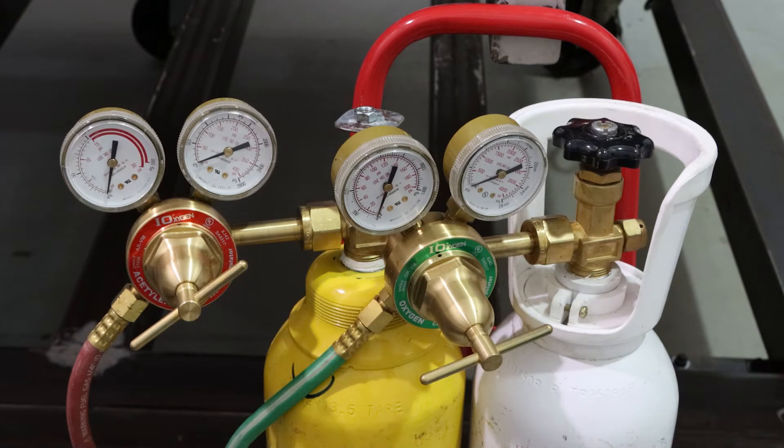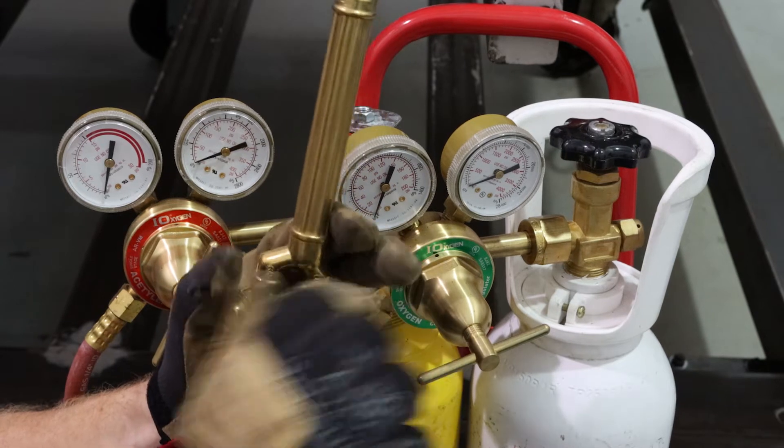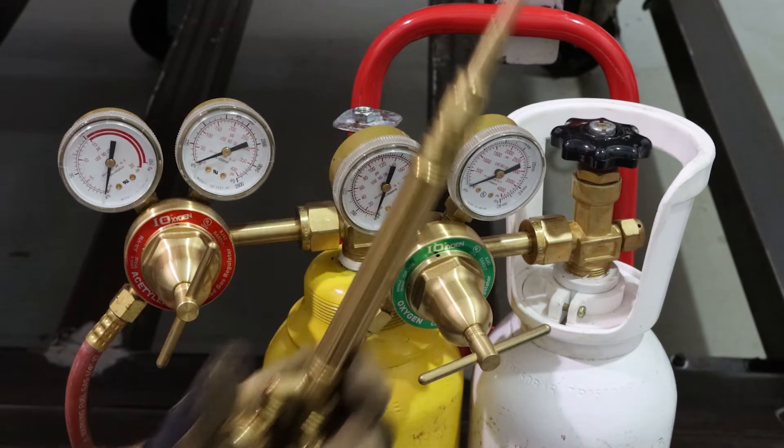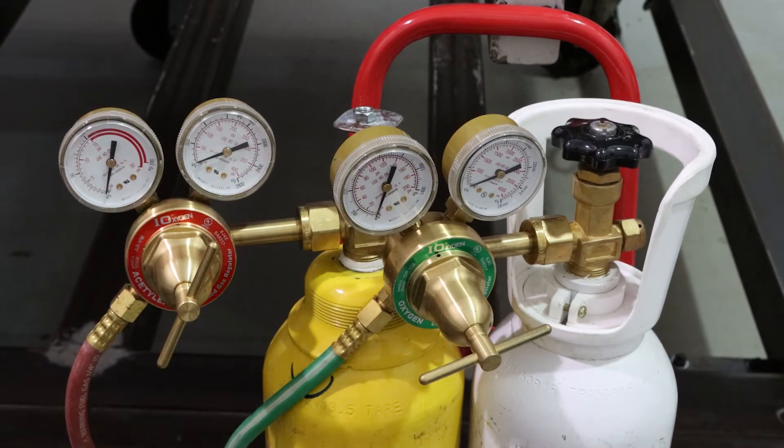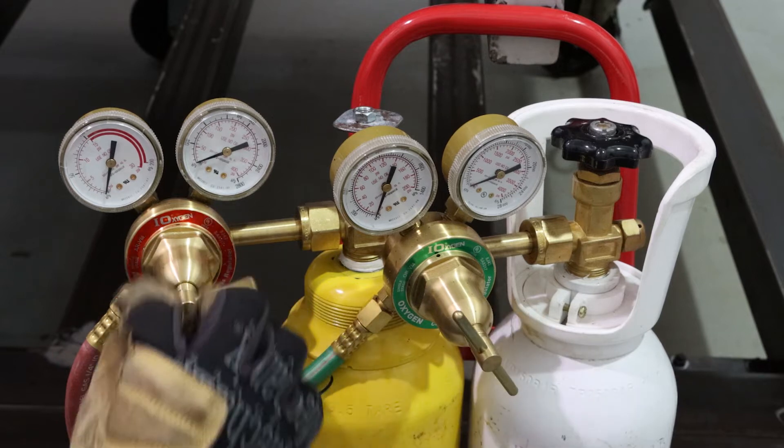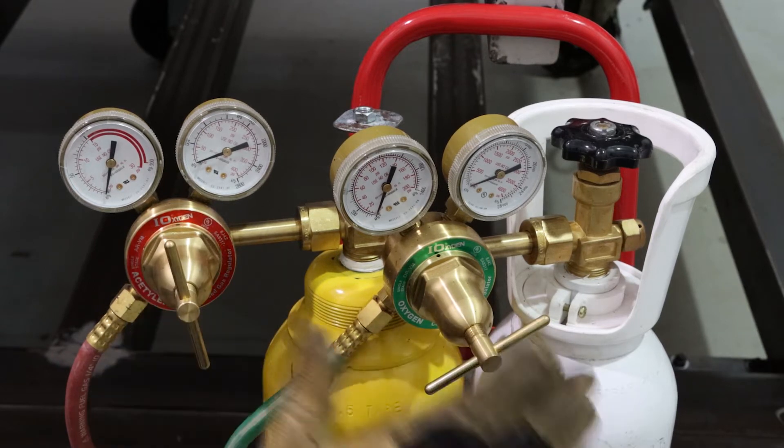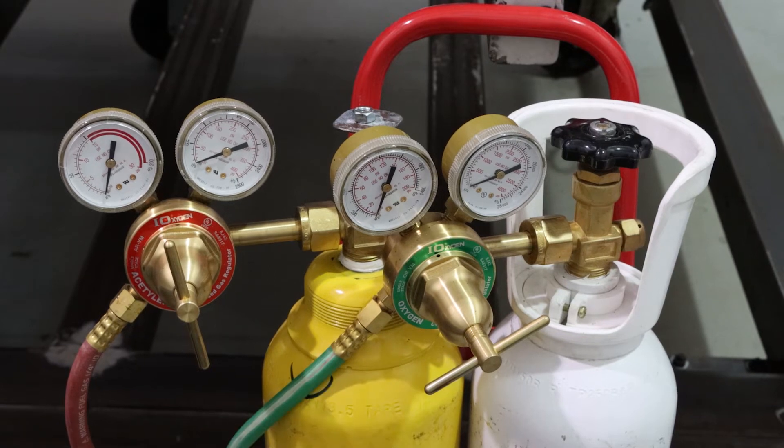So first thing we're going to do is go to our torch and make sure that these guys are both nice and closed, which they are. And we're going to come and check these regulators are all the way closed as well. So now we're okay to open up the bottles.